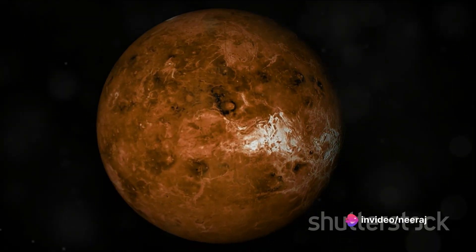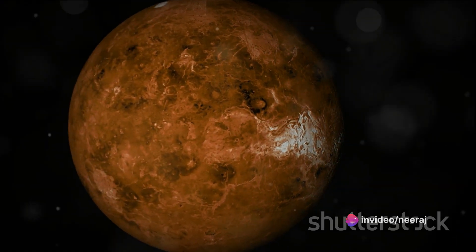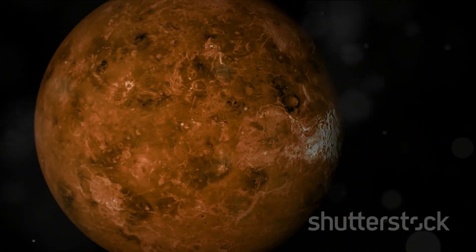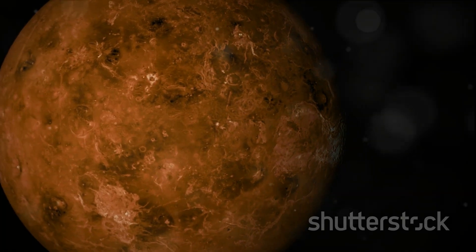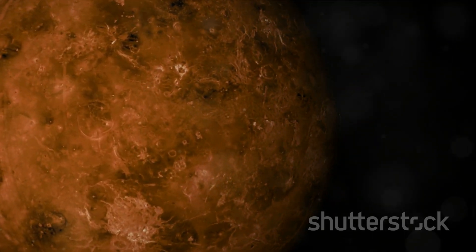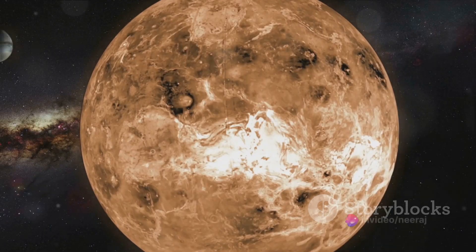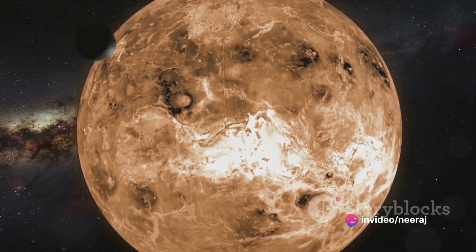The air pressure on Venus is also incredibly high, roughly 92 times greater than Earth's at sea level. Imagine the pressure you'd feel about 3,000 feet under the ocean—that's what standing on Venus would feel like. It's a pressure cooker environment, quite literally.